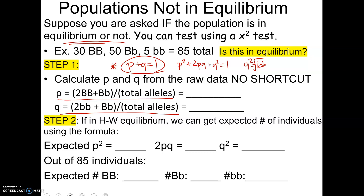So step one: they're giving us raw data — how many individuals show each of the three genotypes. You need to get P and Q from the raw data. Because since we don't know if it's in Hardy-Weinberg equilibrium or not, you can't just assume that 5 over 85 is Q squared. That's only true if it's in Hardy-Weinberg equilibrium, and we can't make that assumption because they're telling us up front that we don't know.